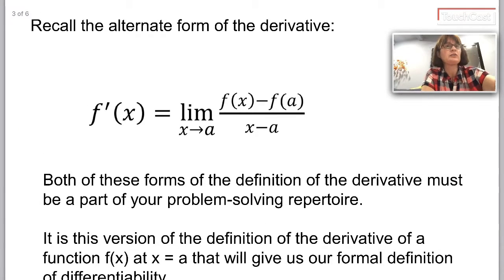So you might remember this, we call this the alternate form of the derivative. f prime of x is the limit as x approaches a, that's an error, let's fix that. That should really say f prime of a. I'm sorry for that error. So f prime of a is the limit as x approaches a of f of x minus f of a over x minus a. And in your 3.1 notes, you practice using that alternate form of the derivative to find the derivative of certain functions at certain a values.